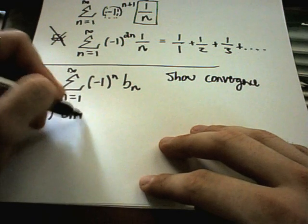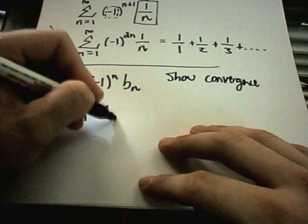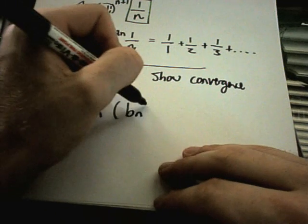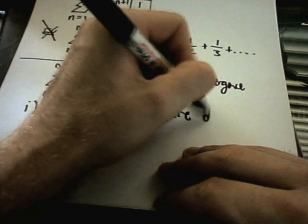One, you have to show that the b sub n plus 1 is less than or equal to b sub n. And all that means is that the b sub n's are decreasing.